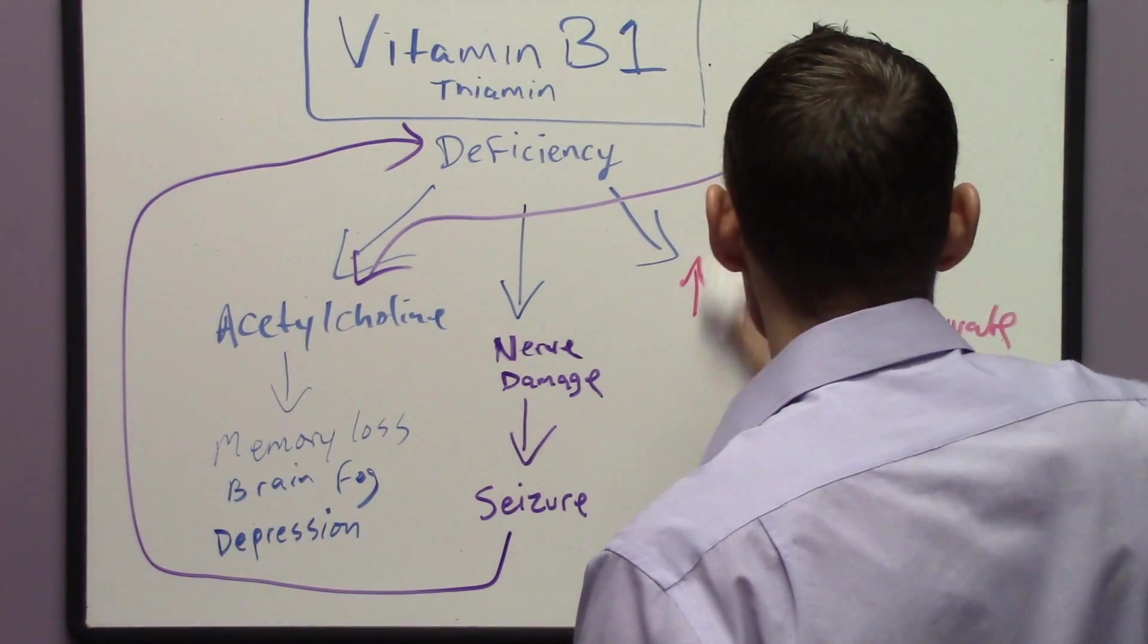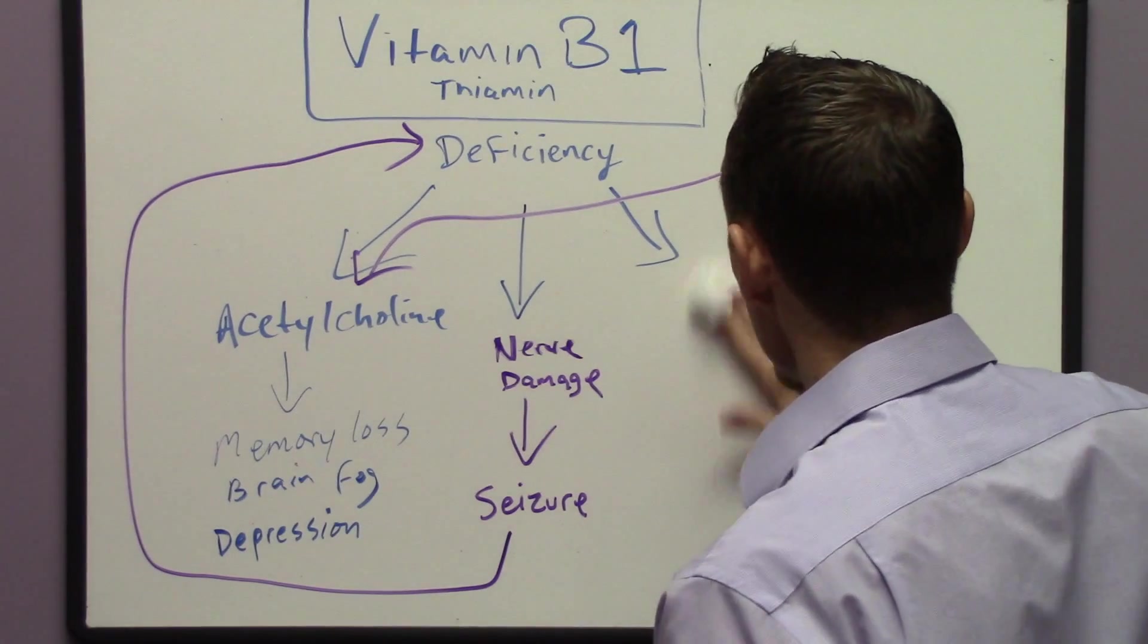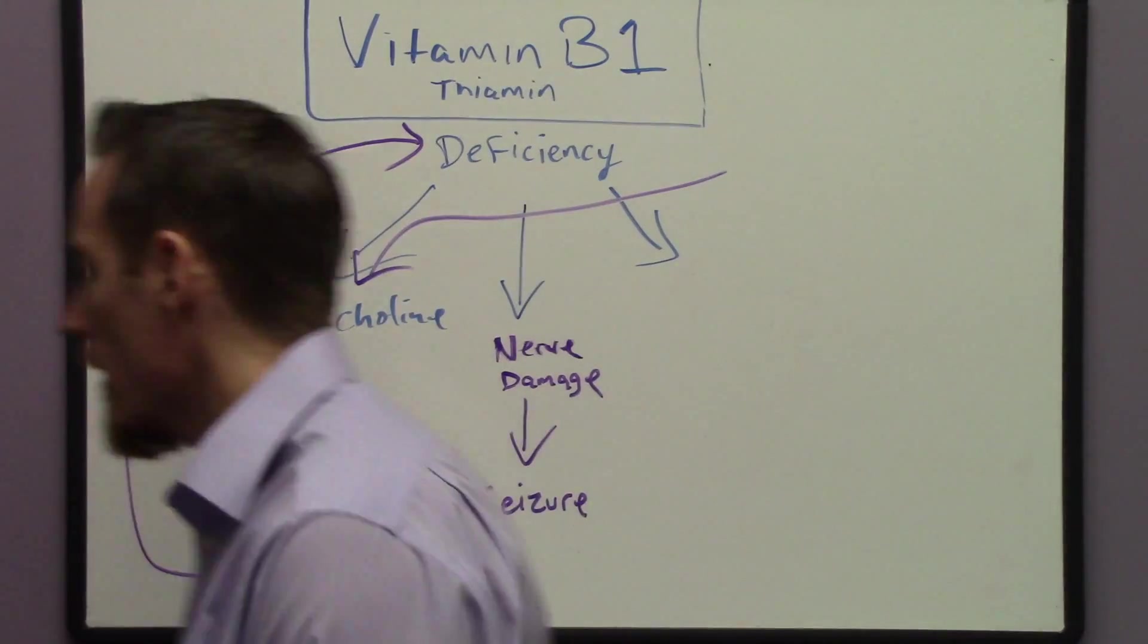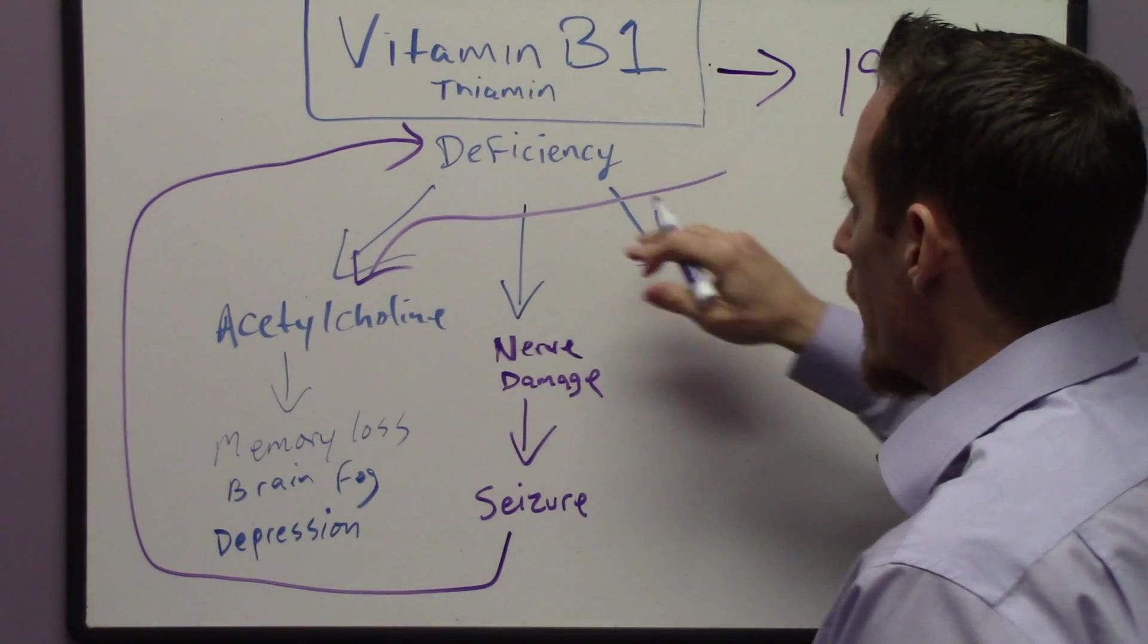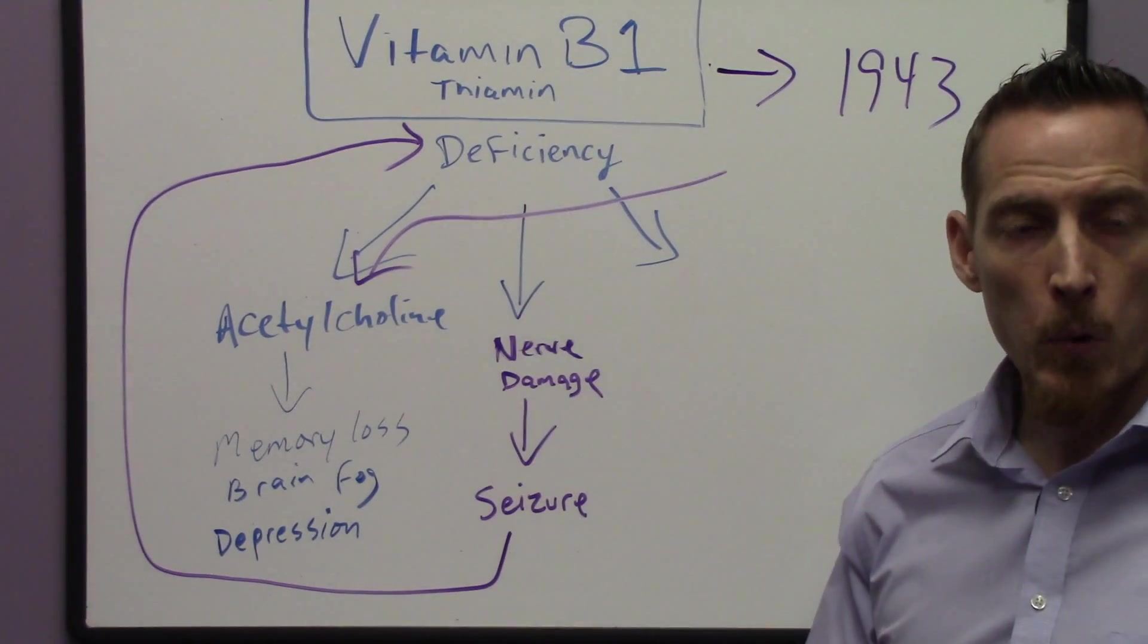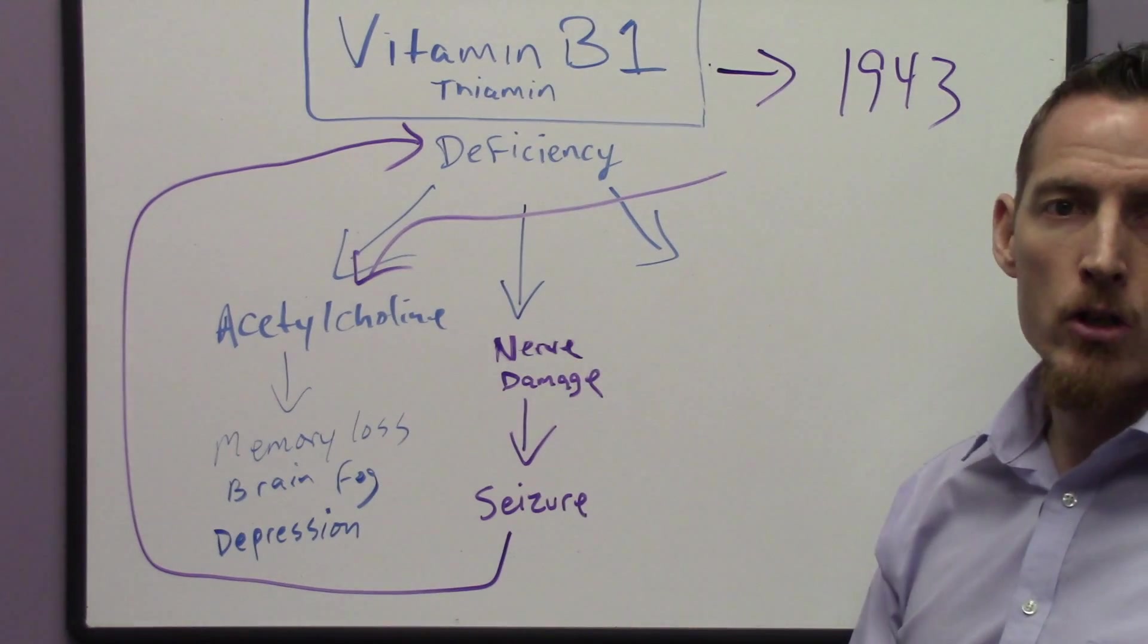And those are the main manifestations of vitamin B1 deficiency. Now, if we take a little quick history lesson, what we know is that in 1943, the US government banned the sale of grain, processed grain primarily because of the known relationship to beriberi.